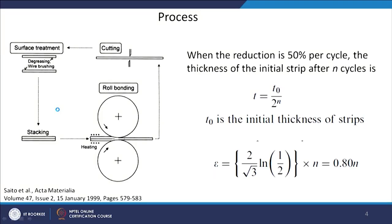This is a schematic diagram of the process. These are the two sheets which have been cleaned and wire-brushed. Starting from the rolling of the sheet: thickness is reduced and length has increased, then you cut the sheet into two halves, clean the sheet surface, stack them again, and the process is repeated. This whole cycle is repeated every time, and in each case the thickness depends on the number of cycles.